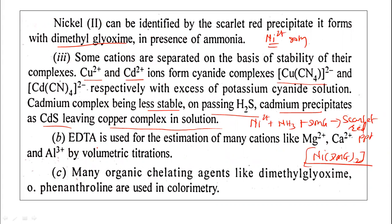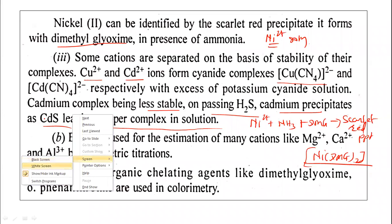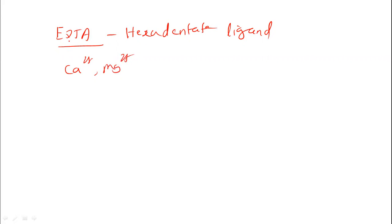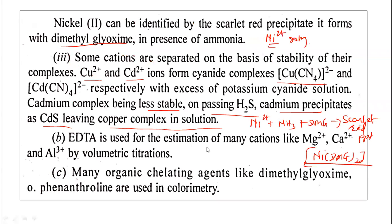EDTA — ethylenediaminetetraacetic acid — is a hexadentate ligand and very important reagent used for the estimation of many cations like magnesium, calcium, and aluminium by volumetric titration. EDTA can form complexes with metal ions such as Ca²⁺ and Mg²⁺, forming calcium-EDTA and magnesium-EDTA complexes. This makes it possible to estimate many cations analytically.